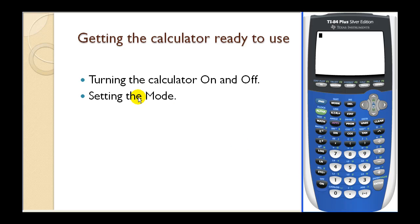Now let's take a look at the mode settings. Here is the mode button. Let's press this. And the main thing I want to talk about here is this second row where it has the word float and then the numbers zero through nine. I recommend leaving it on float. If you do set it to a fixed number of decimal places, let's say three,